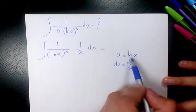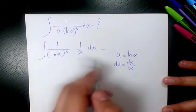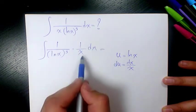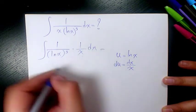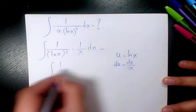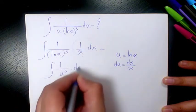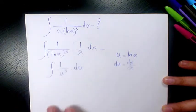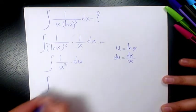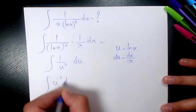As you can see, dx over x is du, and 1 over x is accounted for. So the integral becomes 1 over u cubed du, which we rewrite as u to the power of negative 3 du.